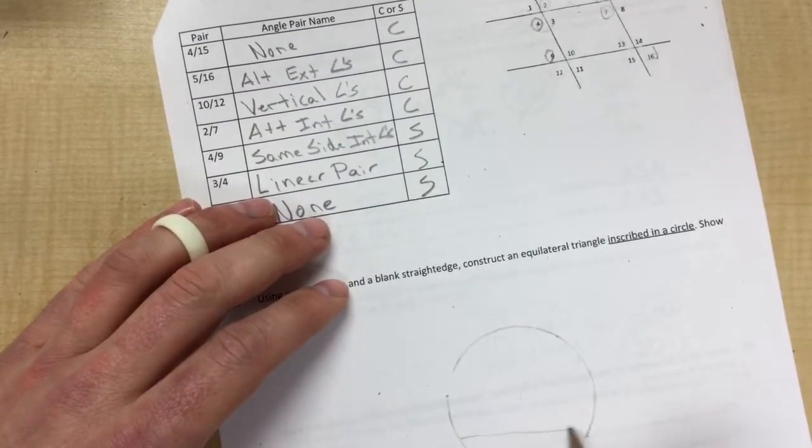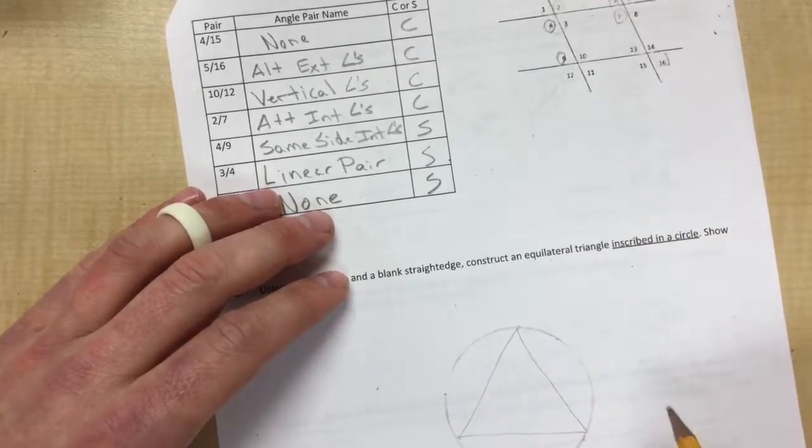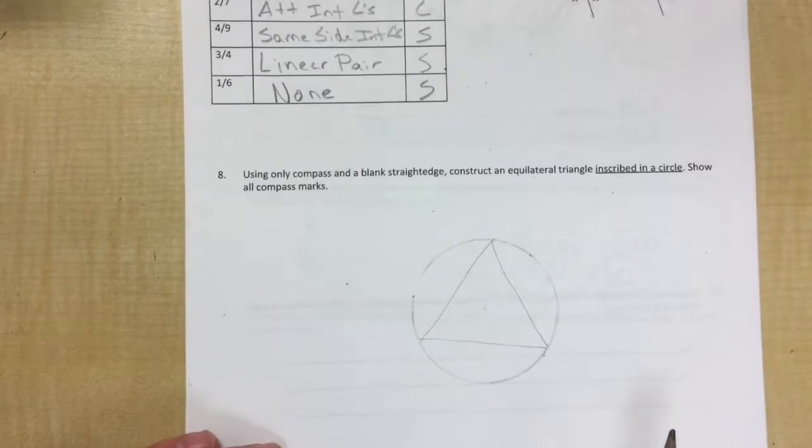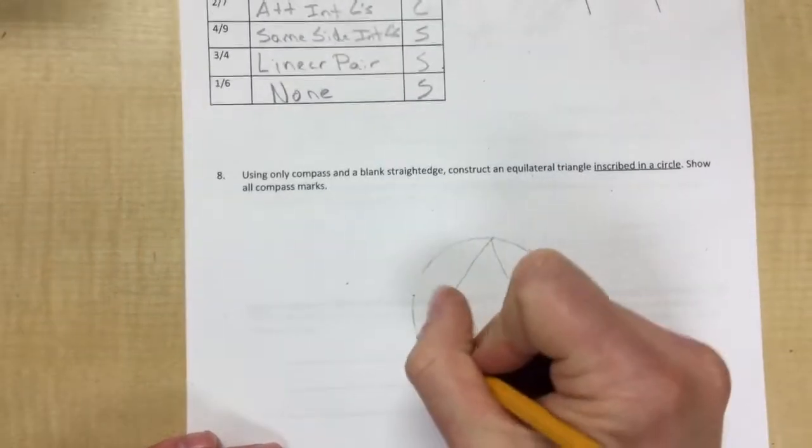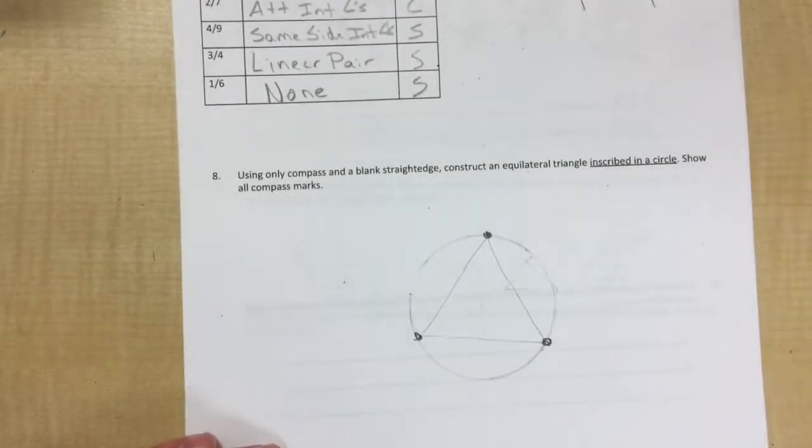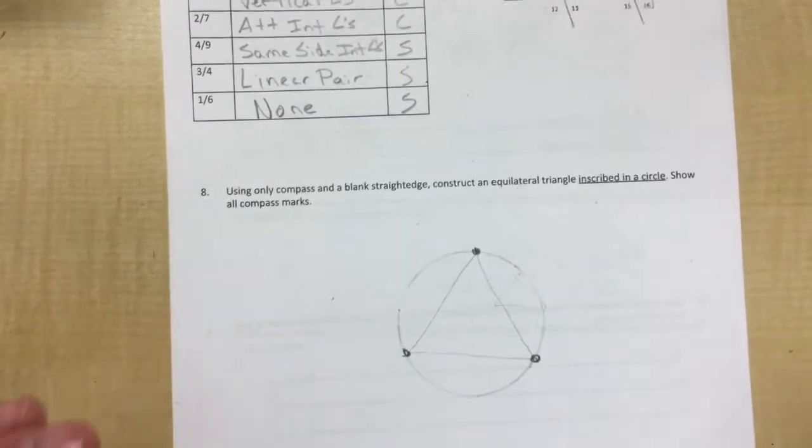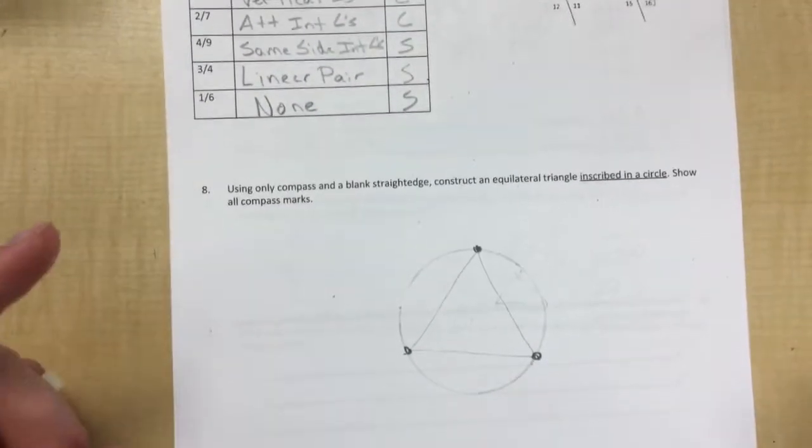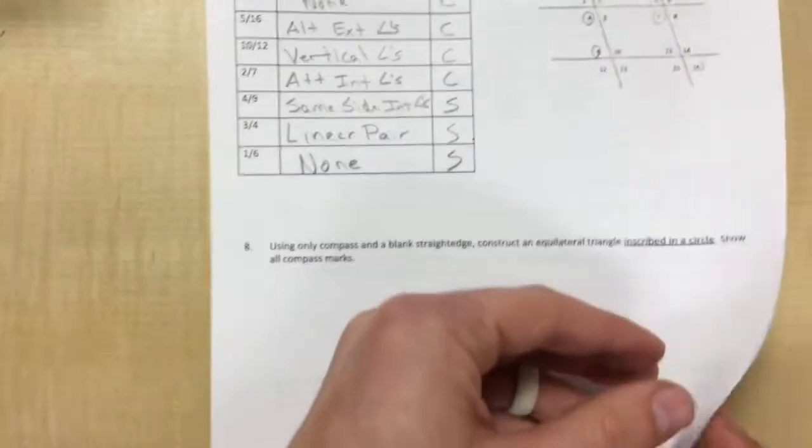So I'm not going to take the time to do it, but it's going to look something like this. And you have to use congruent circles in order to do it. Okay. If you just do an equilateral triangle over here, that's not good enough. Because if it's inscribed, its vertices are on the circle. So, okay. Go for that one on your own. Even though I'm not doing it in the video, still got to do it. Make sure you know how to do it. If you don't know how to do it, then ask.